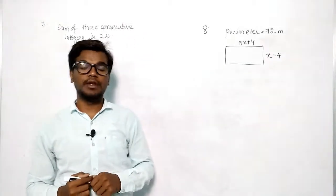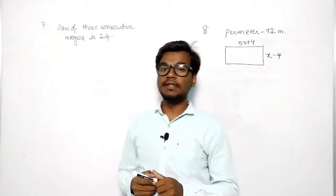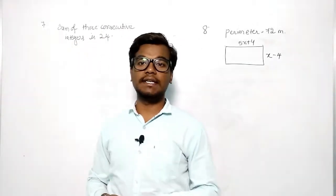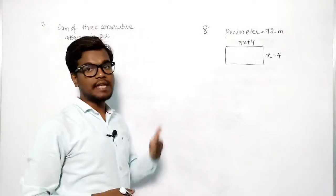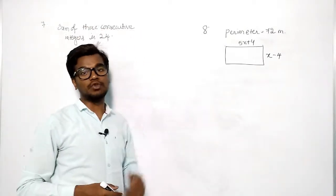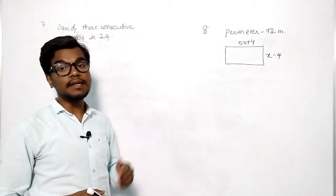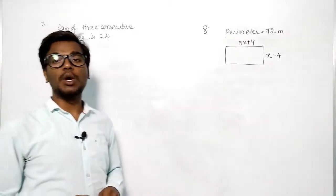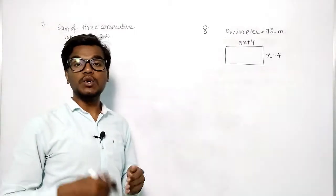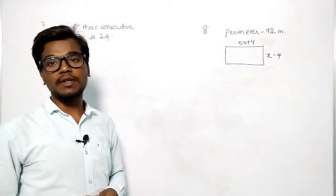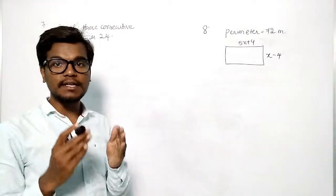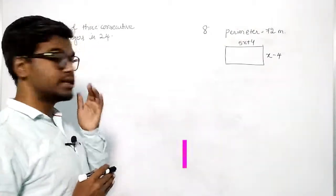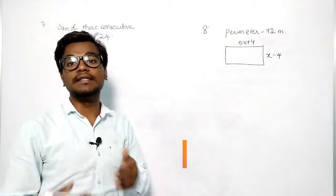Hello viewers, in this module we are going to discuss the seventh and eighth question answers in exercise three. In the seventh question, what is given is: the sum of three consecutive integers is 24, then find those integers.